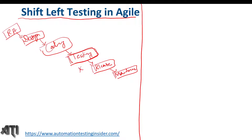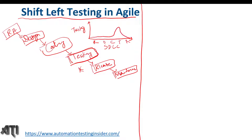That is the biggest problem with this approach. If you draw a chart — with testing on one axis and the software development life cycle phases (requirement analysis, design, coding, testing, release) on the other — the testing effort is concentrated just before the release.